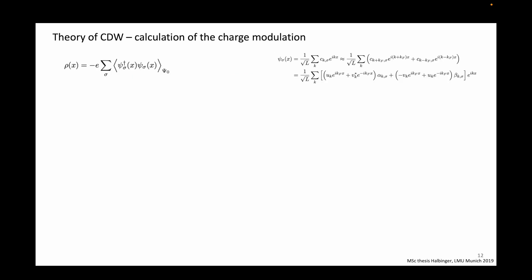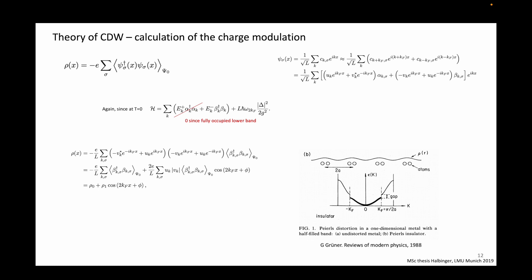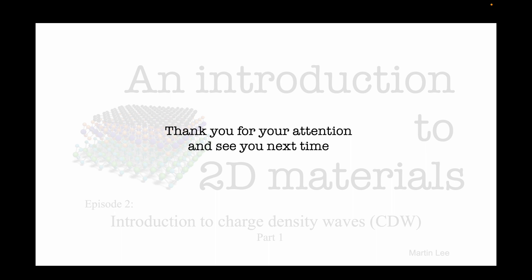Next, we derive the periodic density wave. We start with rho, the density of charges as a function of position along the chain. The field operator can be written in this new basis as well. Since the upper band does not contribute, we ignore alpha and we only deal with beta. Then, plugging into the equation for rho and skipping some math, we end up with this expression for the standing wave of charge density. Let's take a break here and end the first part of this episode on introduction to charge density waves.